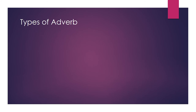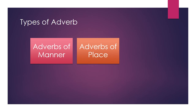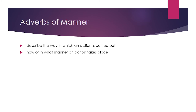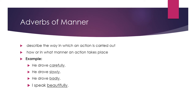Now let me introduce some types of adverbs: adverb of manner, adverb of place, adverb of time, adverb of frequency, and adverb of degree. First is adverb of manner. It describes the way in which an action is carried out — how or in what manner an action takes place. For example: he drove carefully, he drove slowly, he drove badly, I speak beautifully. These adverbs describe the manner in which driving or speaking has been carried out.